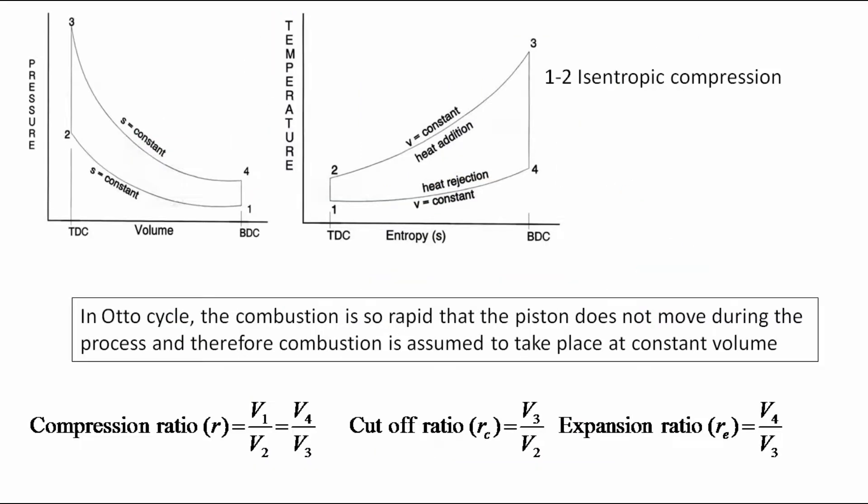In Otto cycle, 1 to 2 is isentropic compression, 2 to 3 is constant volume heat addition, 3 to 4 is isentropic expansion, 4 to 1 is constant volume heat rejection.